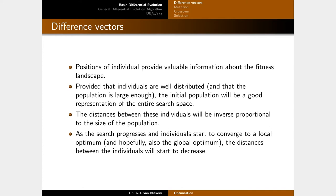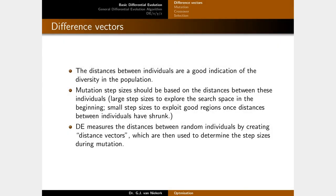As the search progresses and mutation and crossover are applied, individuals start to converge to a local optimum — hopefully the global optimum. The distances between individuals will decrease, clustering around local optima. This means distances between individuals are a good indication of population diversity: larger values mean more diversity, smaller values mean less. Mutation step sizes should therefore be based on these distances — large steps to explore early, small steps to exploit later.